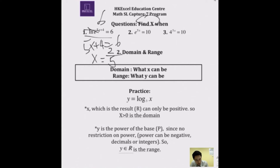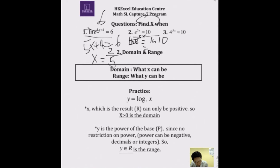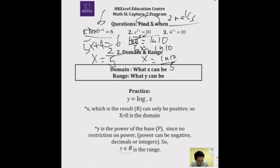Question 2: e to the power 5X equals 10. How do you find X? You need to eliminate the e, so take LN of both sides. LN is log to the base e — same base and same result, so you can cross it out. That leaves 5X equals LN 10, so X equals LN 10 over 5. This kind of question in the IB exam is usually worth two marks.